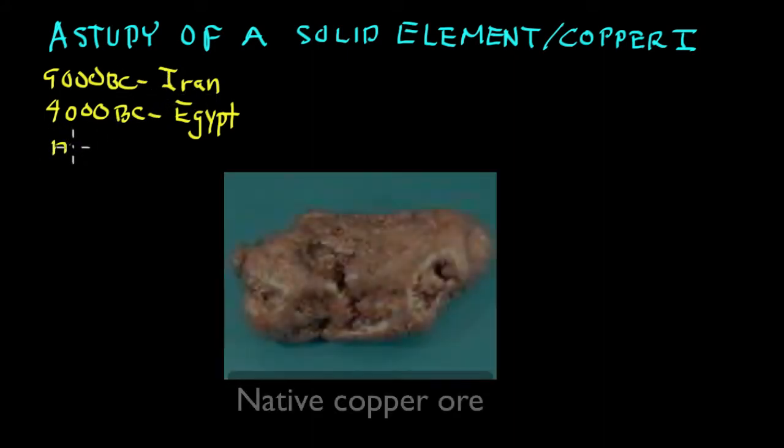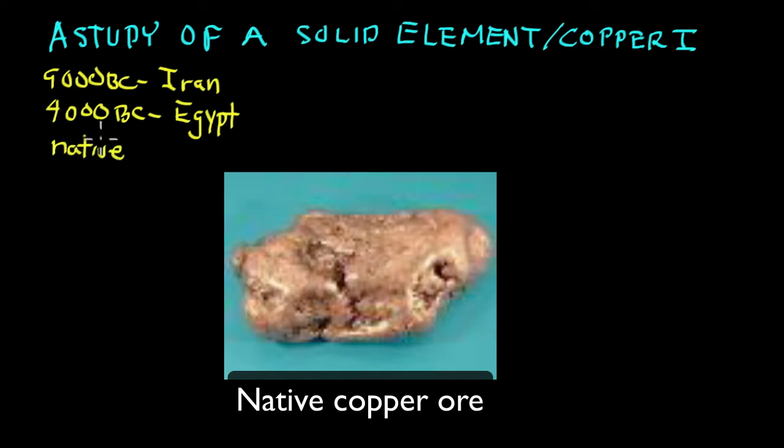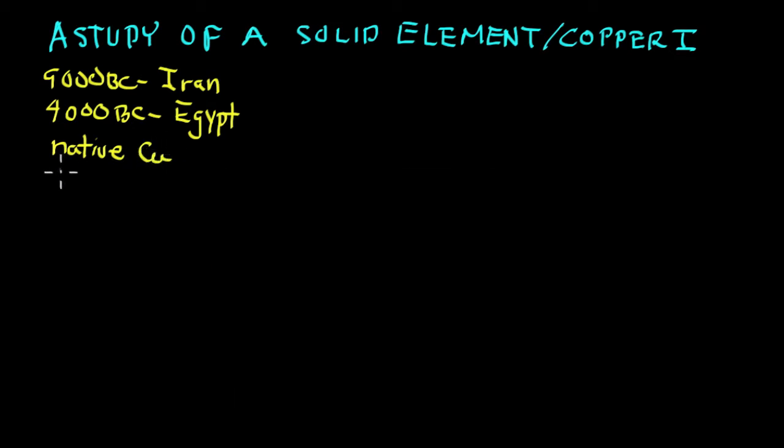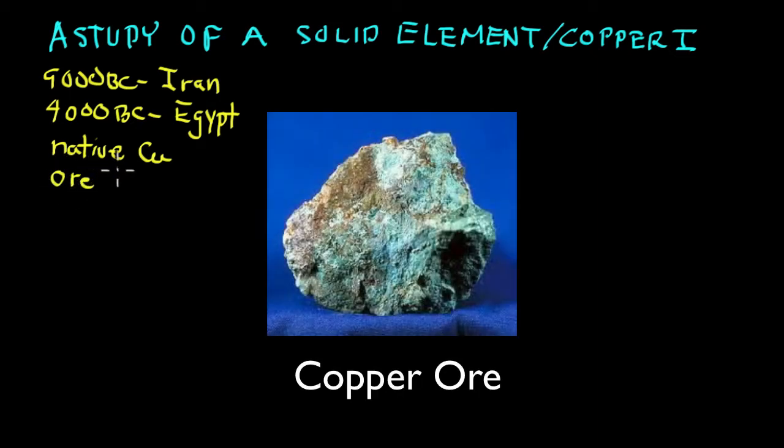Native copper means that it was not combined with any other elements, and native copper was easy to use. Nowadays, we get copper out of what's called an ore. An ore is copper plus some other elements.